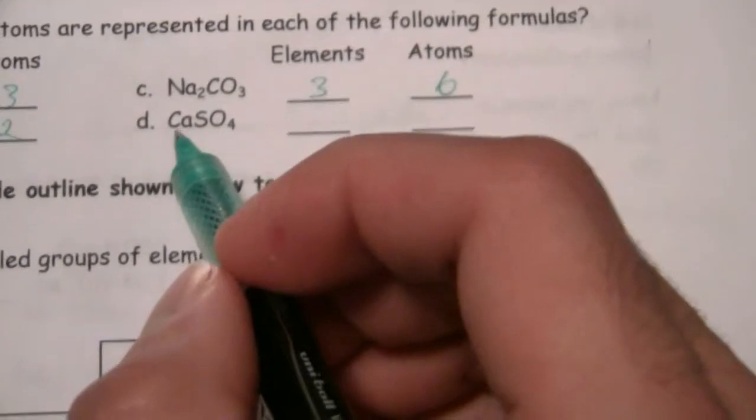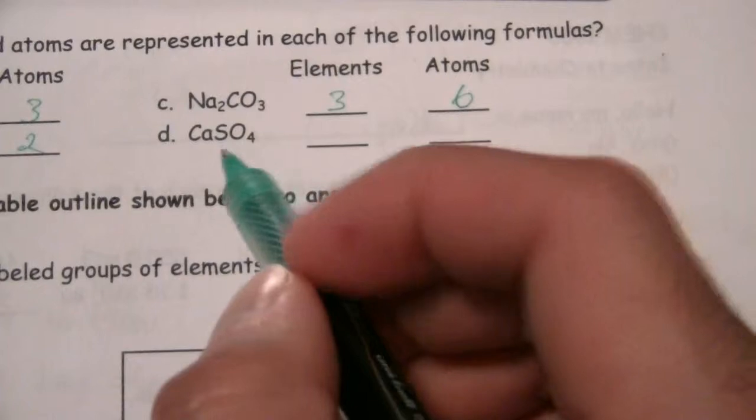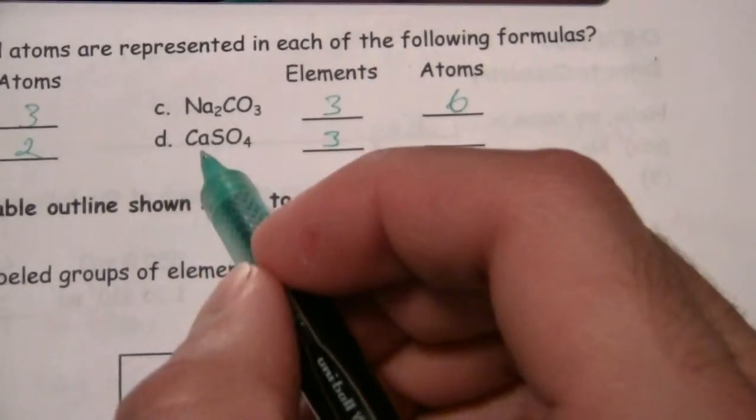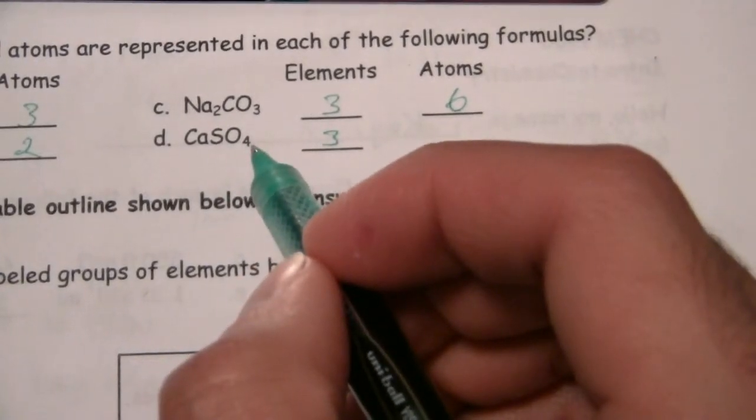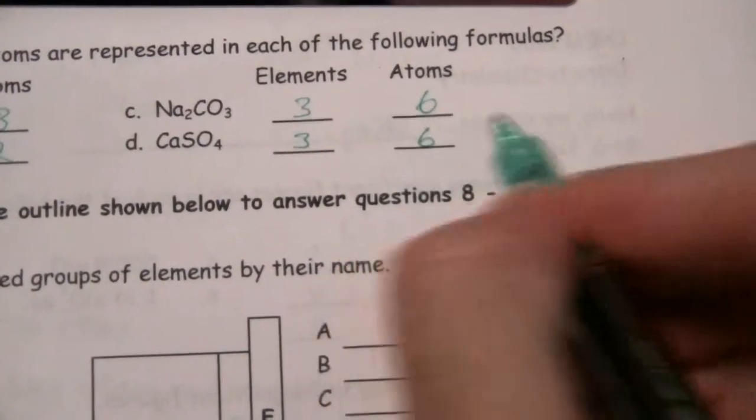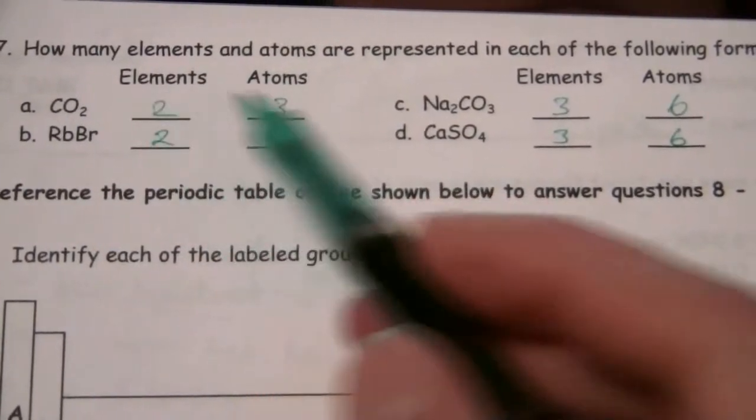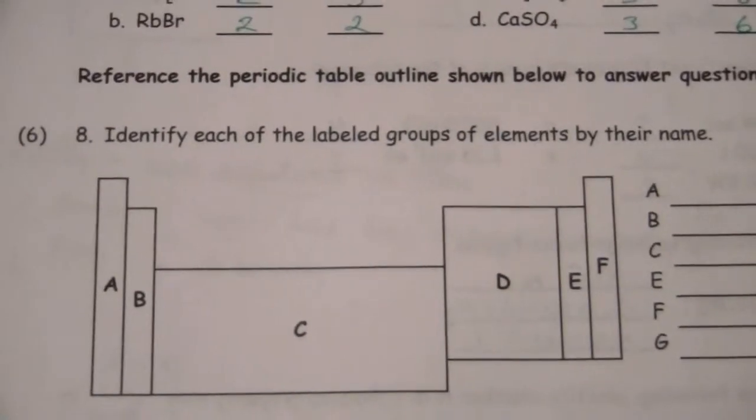And here we have the element calcium, sulfur, and oxygen. So three elements, one atom of calcium, one atom of sulfur, four atoms of oxygen. So four, five, six atoms of each. As long as you have your understanding of elements and atoms clear, then that is really not a difficult problem at all.